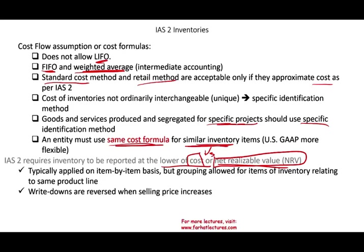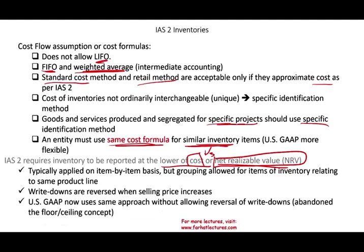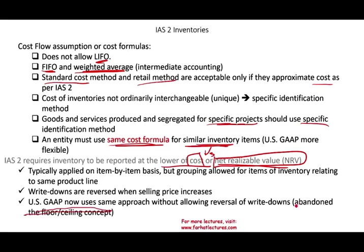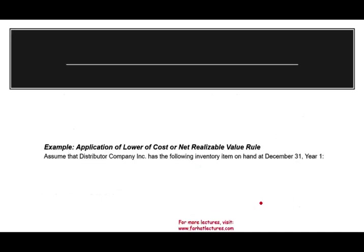Write-downs are reversed when selling prices increase under IFRS — if you write something down, IFRS allows you to go back and reverse it, up to your original cost. US GAAP now uses the same approach in computing NRV as part of the convergence process. However, US GAAP does not allow you to reverse any write-downs. The old concept of floor and ceiling when computing NRV is no longer used — GAAP abandoned it.